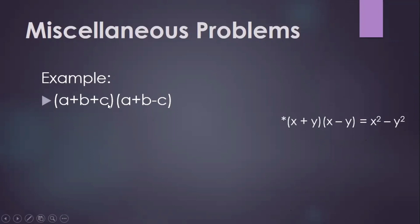In this example, a plus b plus c multiplied to a plus b minus c. For us to obtain the product, we have to group it first by using the associative property. So in the first factor, we can group a and b, and in the second factor, we can also group a and b for us to obtain this form.